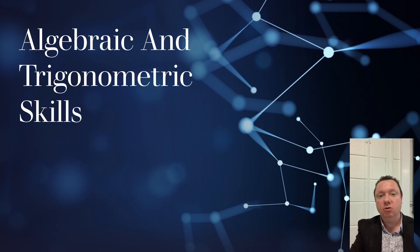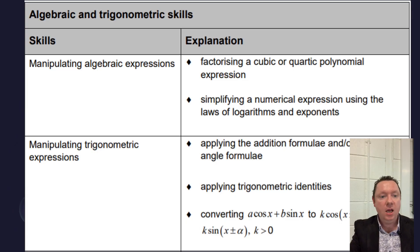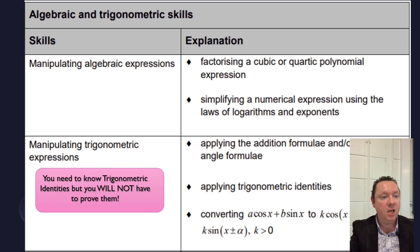Okay, let's start with algebraic and trigonometric skills. So the first thing on this page, we've got manipulating algebraic expressions and manipulating trigonometric expressions. You will need to know trigonometric identities, but you won't have to prove trigonometric identities, which implies probably you won't have to use trigonometric identities to prove anything. But essentially, you're not going to be proving trigonometric identities.